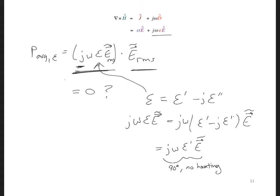Then, for the second term, we have j times minus j is minus 1, so we get a plus there, omega epsilon double prime E. And this is in phase with the electric field, so we will get heating and power loss there.